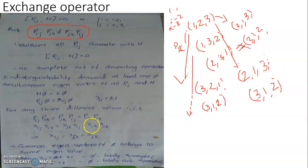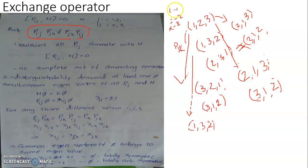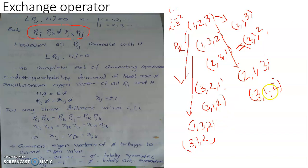We will check what the result is if we perform P_jk first — that is, the 2-3 particle exchange. This exchange gives rise to the system appearing as (1,2,3) being modified as (1,3,2). Upon this, we further apply P_ik, which is the 1-3 exchange, modifying the system with 1 replaced by 3 and 3 replaced by 1, giving the appearance (3,1,2).